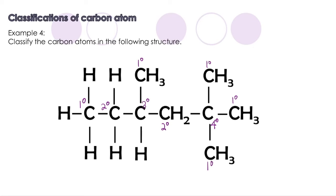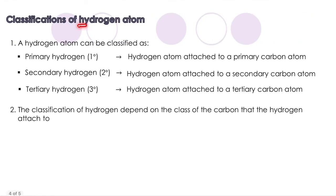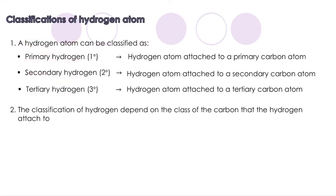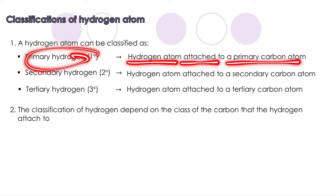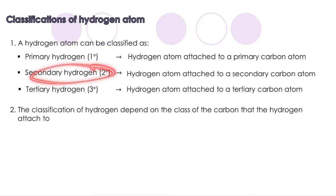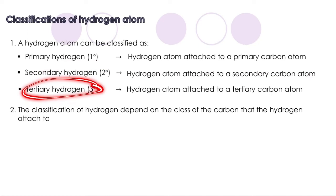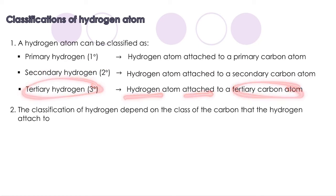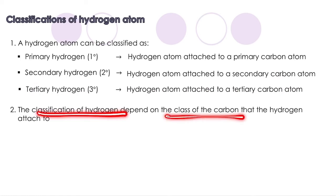Next, let's look at how we classify hydrogen atoms. Hydrogen atoms can be classified as primary, secondary, and tertiary. Primary hydrogen is a hydrogen atom attached to a primary carbon. Secondary hydrogen is a hydrogen atom attached to a secondary carbon. Tertiary hydrogen is a hydrogen atom attached to a tertiary carbon. The classification of hydrogen depends on the class of carbon that the hydrogen is attached to.